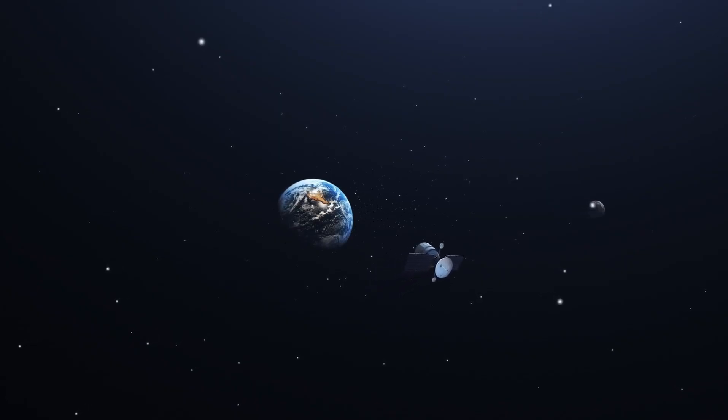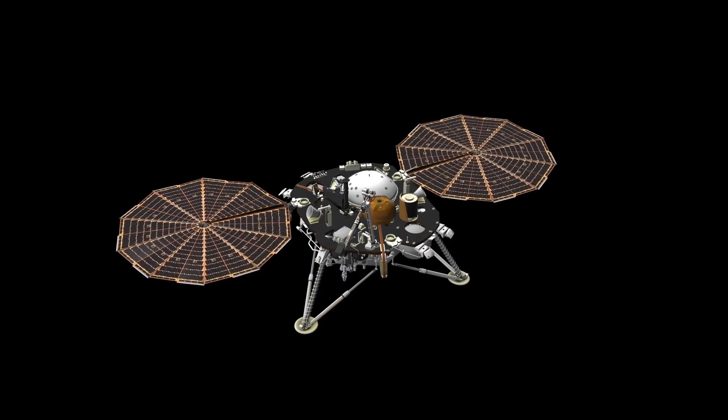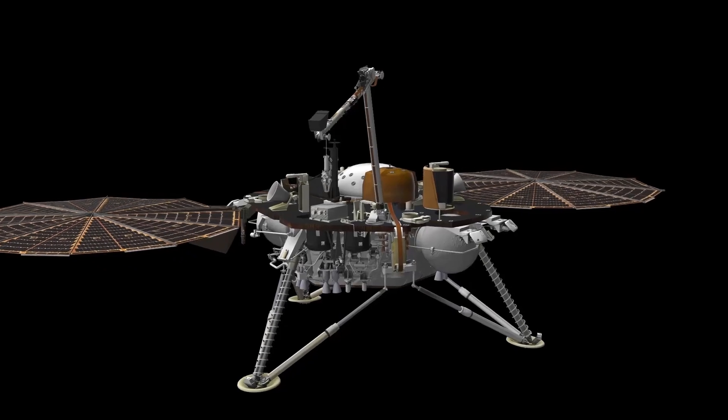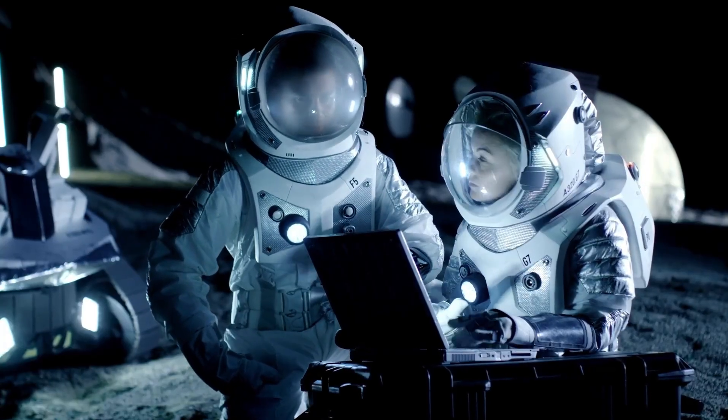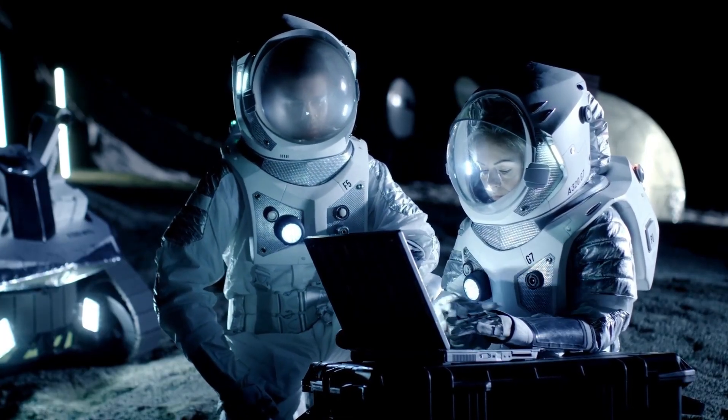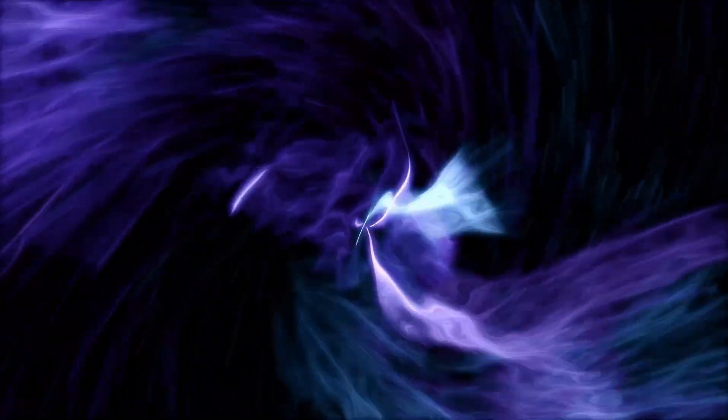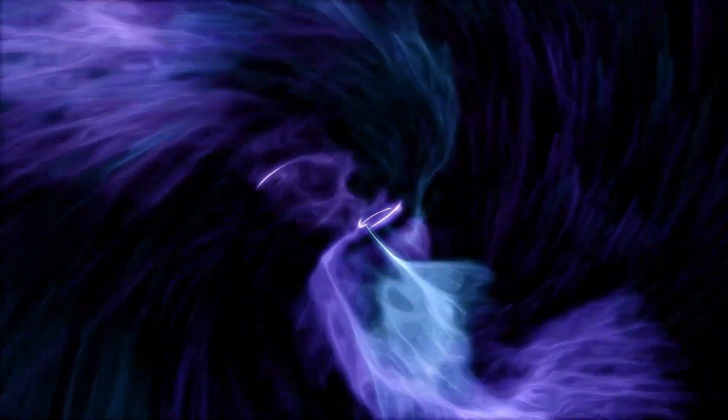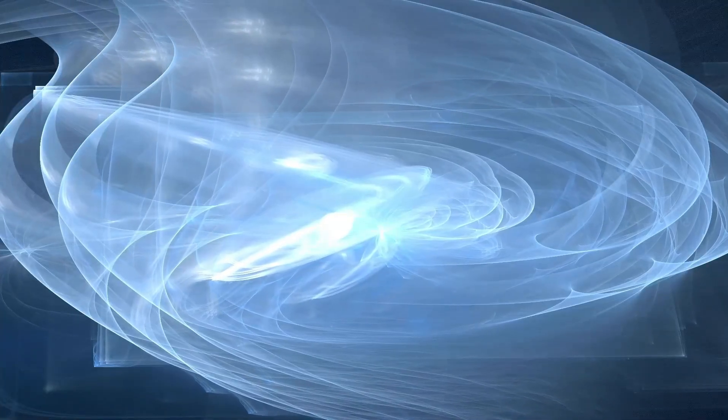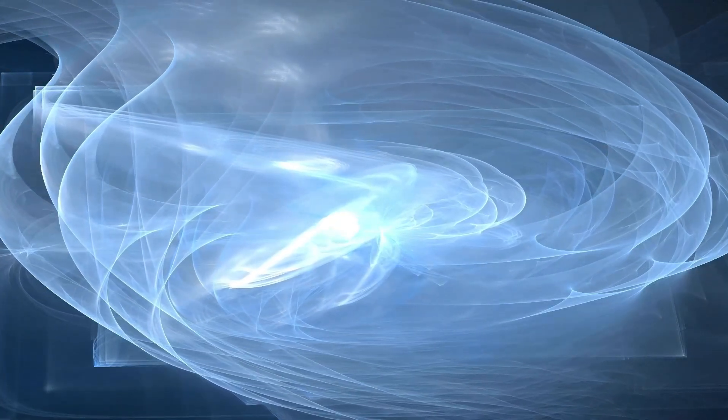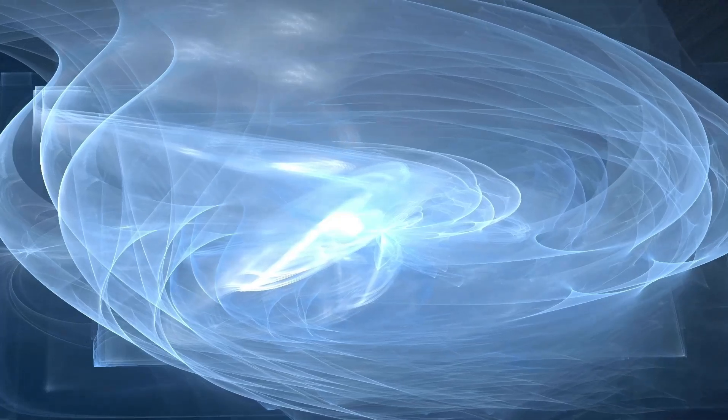The continued survival of the Voyager spacecraft is nothing short of miraculous. As their power supply diminishes, NASA engineers are constantly faced with difficult choices regarding which systems to keep running. The fact that they have managed to stretch the mission decades beyond its intended lifespan is a testament to both the durability of the spacecraft and the ingenuity of the scientists maintaining them. One of the greatest challenges is the sheer distance involved. With Voyager 1 now over 15 billion miles away from Earth, communication takes approximately 22.5 hours one way, meaning any command sent requires nearly two days for a round-trip response. Despite these challenges, NASA continues to troubleshoot issues and send updates.